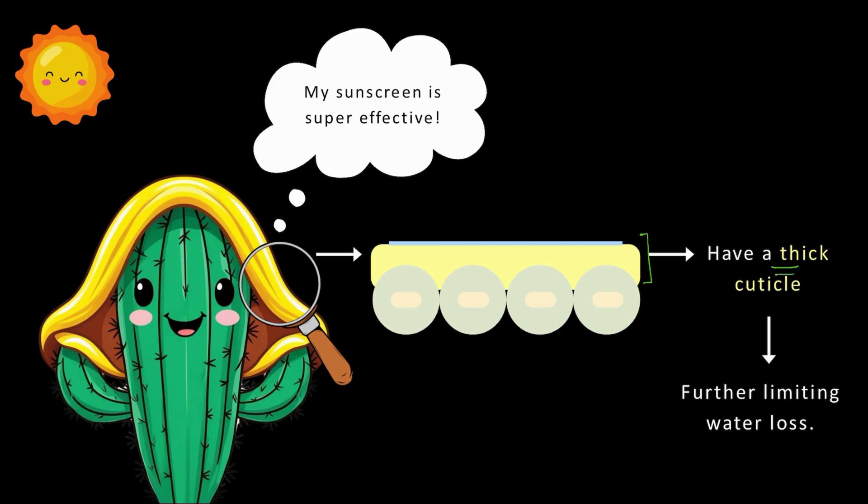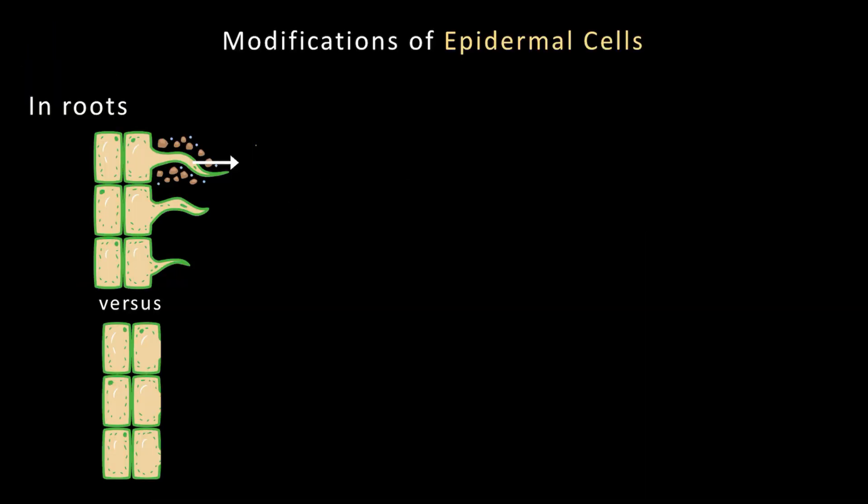But that's not all. The epidermis gets creative depending on where it is. For example, in the roots, the epidermis grows long finger-like projections called root hairs which increase the surface area for absorption of water and minerals from the soil.